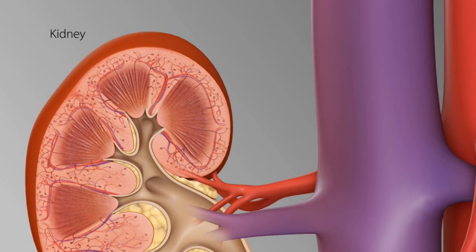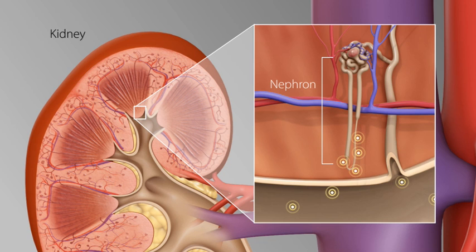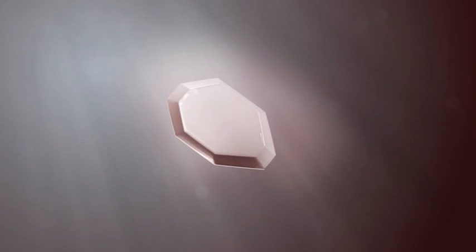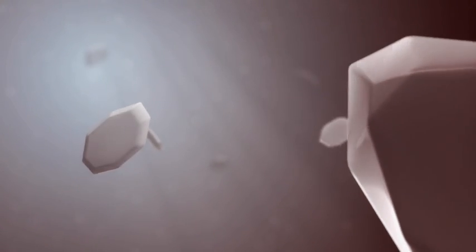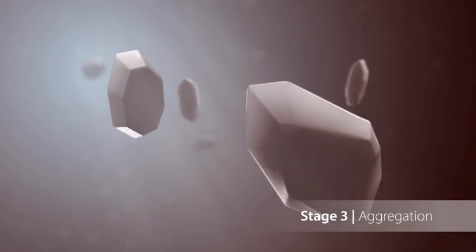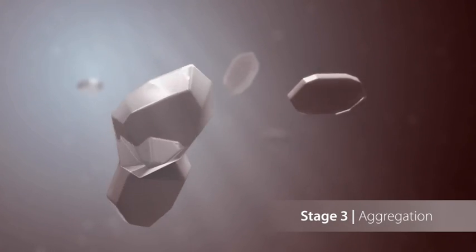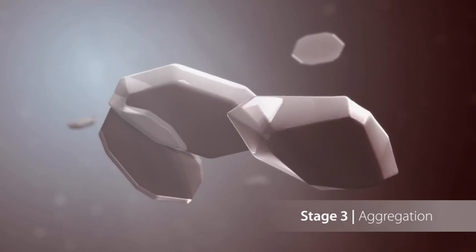The tiny crystal formations travel down the nephron and are usually deposited at the renal papilla, where they undergo the next major phase: growth. Crystals that have already formed then begin to stick together, forming large aggregates. As we can see, crystals can aggregate very quickly.